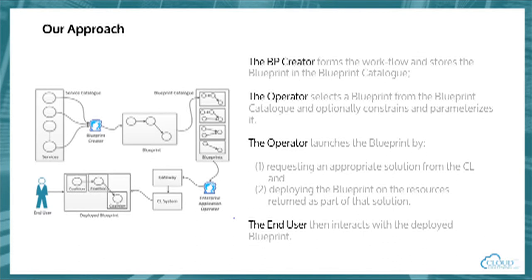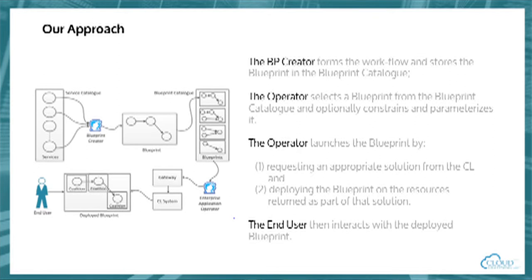Our approach is to look at the following way of creating services within the cloud. We postulate that there's a service catalogue — these services are created by expert programmers and effectively detail specific implementations of possibly large applications. Each of these services could be a high-performance computing application in itself. These are pre-built, in a catalogue, and profiled to a certain extent. We then see an actor which we call a blueprint creator, who will take these services and combine them into a workflow so that we can sequence or have them communicate with each other as necessary.